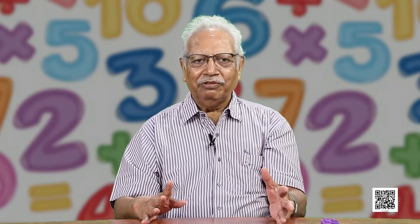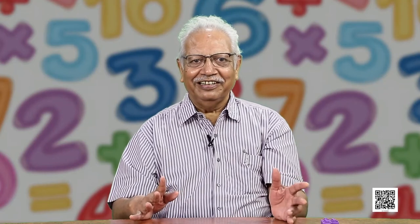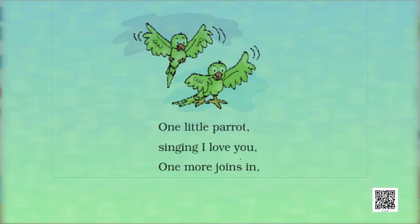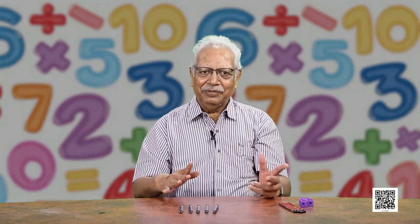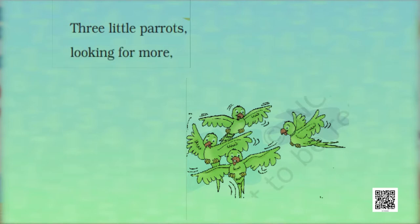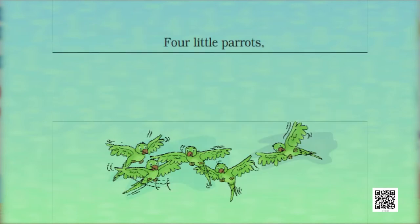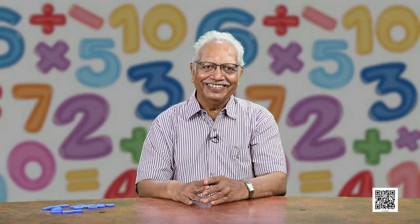Let us revise what we have learnt with the help of a poem about parrots — green colored with a red beak. 1 little parrot singing, 1 more joins in, making them 2. 2 little parrots resting on a tree, 1 more joins in, making them 3. 3 little parrots looking for more, 1 more joins in, making them 4. 4 little parrots wanting to dive, 1 more joins in, making them 5. Enjoyed the poem of 5 parrots?